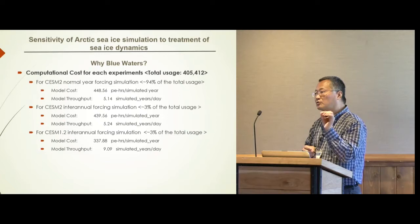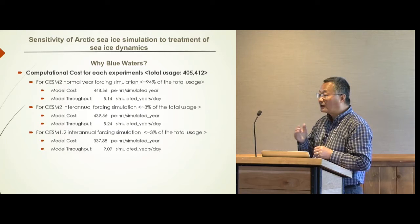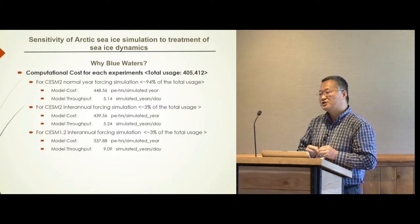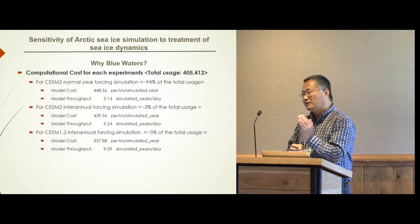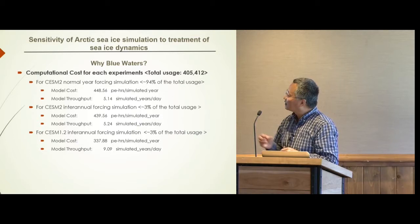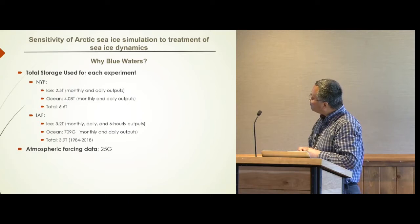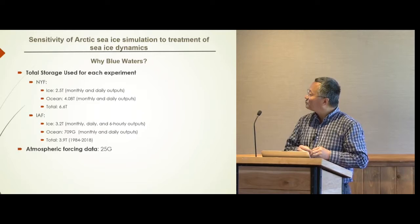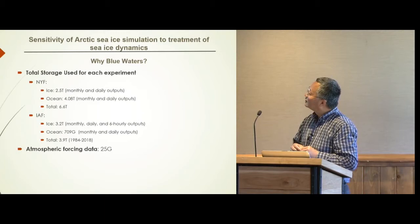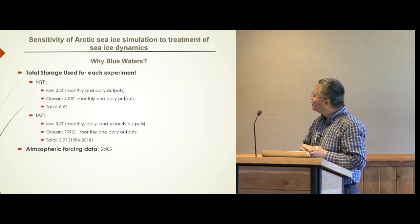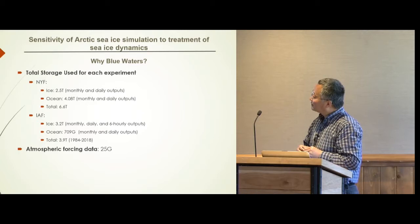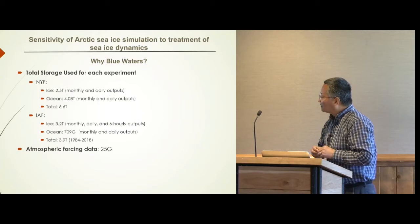We also conducted simulations for inter-annual variation because wind stress can change with time. We want to look at the impacts of time-variant wind stress and atmosphere forcing on CIS dynamics. The data output from a single climatology simulation is about 6.6 terabytes, and for a single inter-annual simulation it is about 3.9 terabytes. Our atmosphere forcing data has a size of 25 gigabytes.